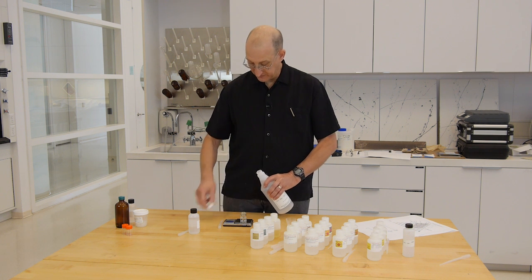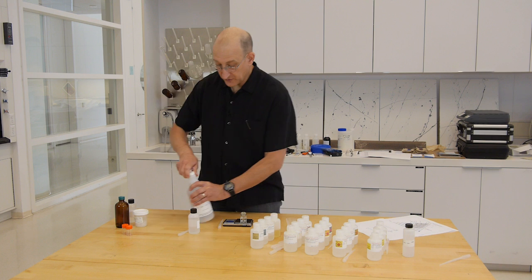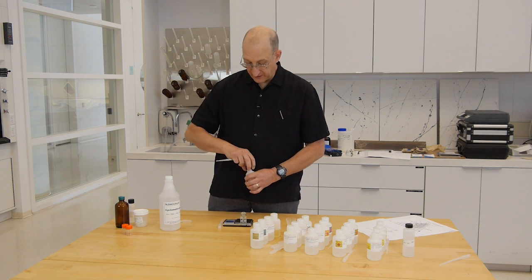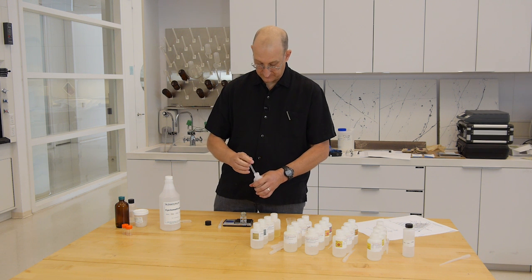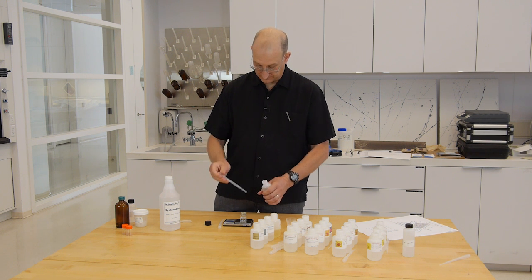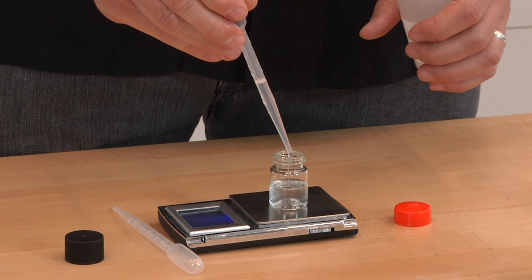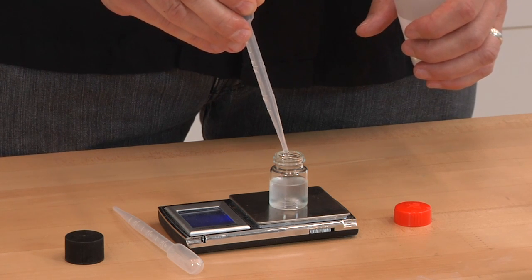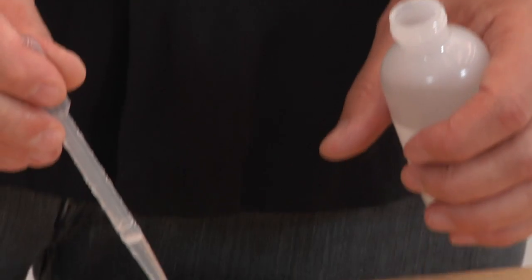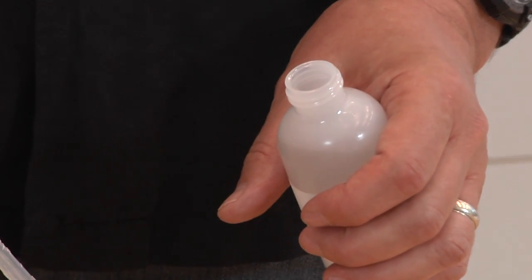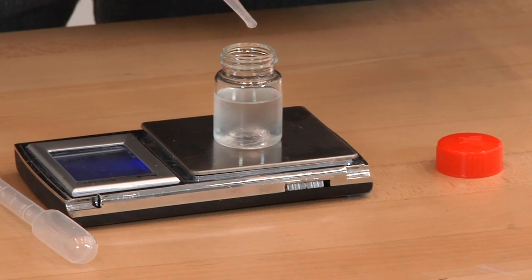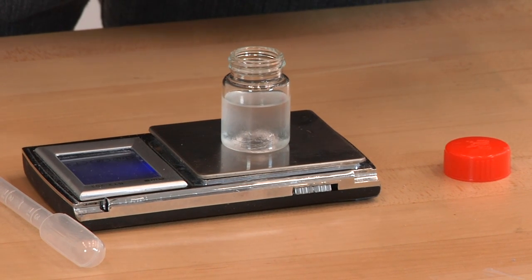We tare the balance, and we'll do 25% of the ECOSURF EH3, or 2.5 grams.